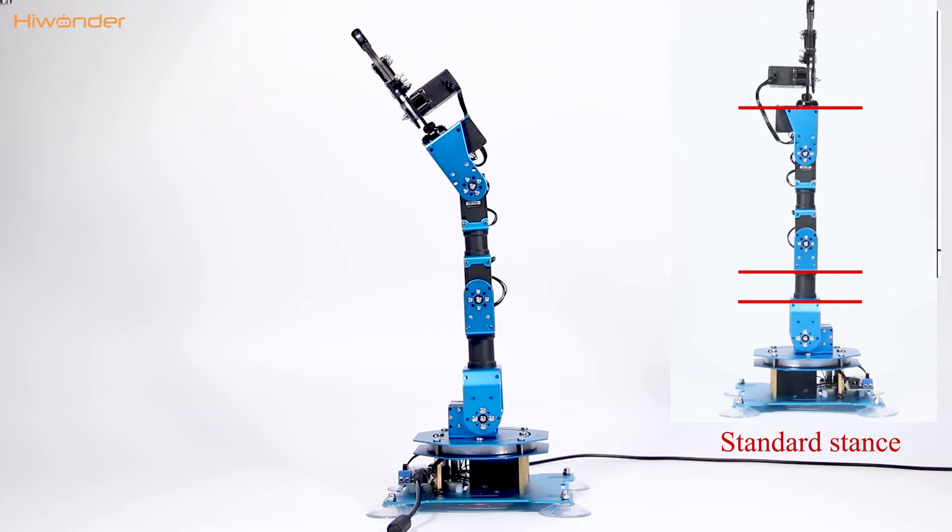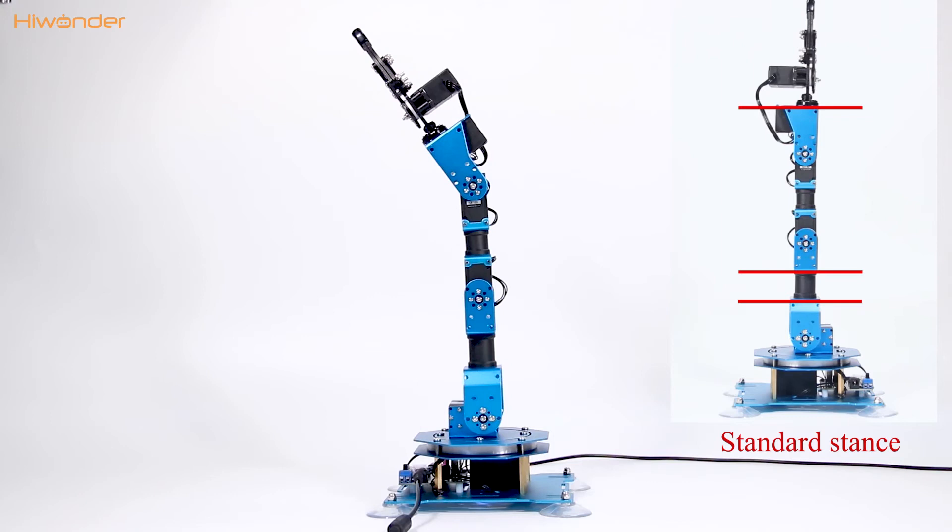This is the standard position of the robotic arm. We can find that the angle is over 30 degrees.